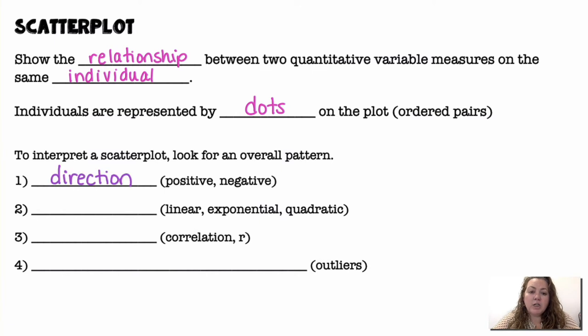Alright, so we're looking at direction, is it positive or negative? Form, is it linear, exponential, quadratic? Strength, we're looking at the correlation, which is the r value. And then, any deviations from the pattern or outliers.